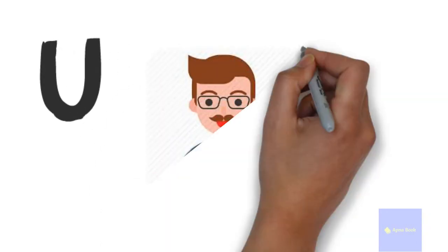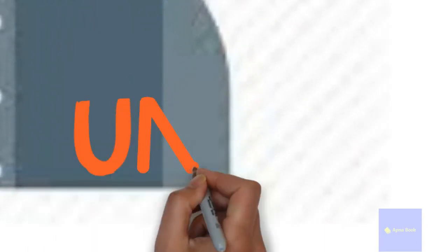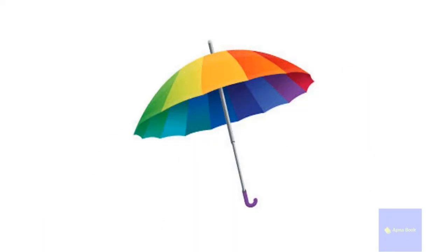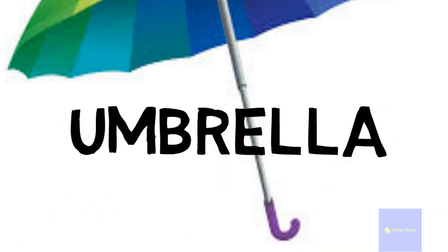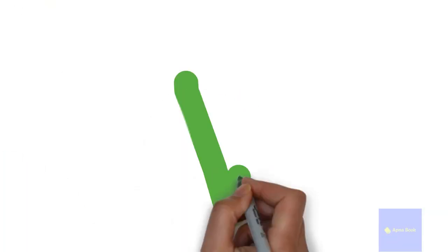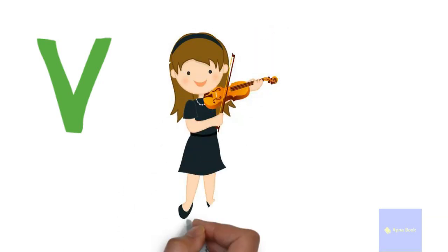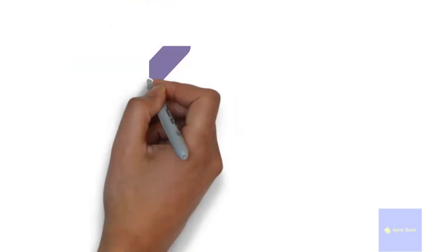U for uncle, U for umbrella. V for violin, V for violet.